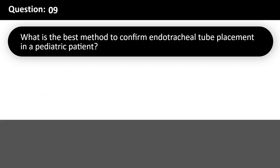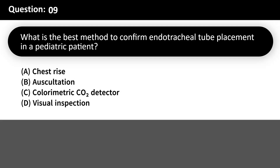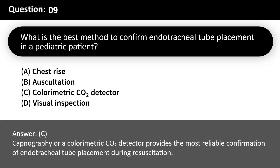What is the best method to confirm endotracheal tube placement in a pediatric patient? A. Chest rise. B. Auscultation. C. Colorimetric CO2 detector. D. Visual inspection. Answer: C. Capnography or a colorimetric CO2 detector provides the most reliable confirmation of endotracheal tube placement during resuscitation.